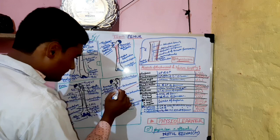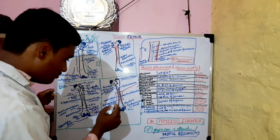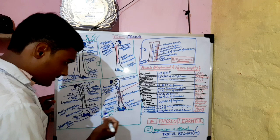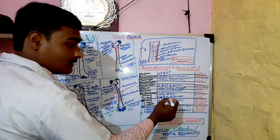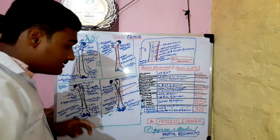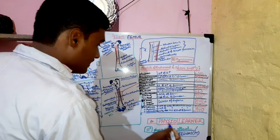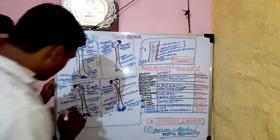The linea aspera is found on the posterior surface. Vastus medialis is attached here. The gastrocnemius medial head is attached from the medial condyle of the femur, and the lateral head is attached from the lateral surface of the lateral condyle of the femur. Adductor brevis, adductor longus, and adductor magnus all attach to the linea aspera.